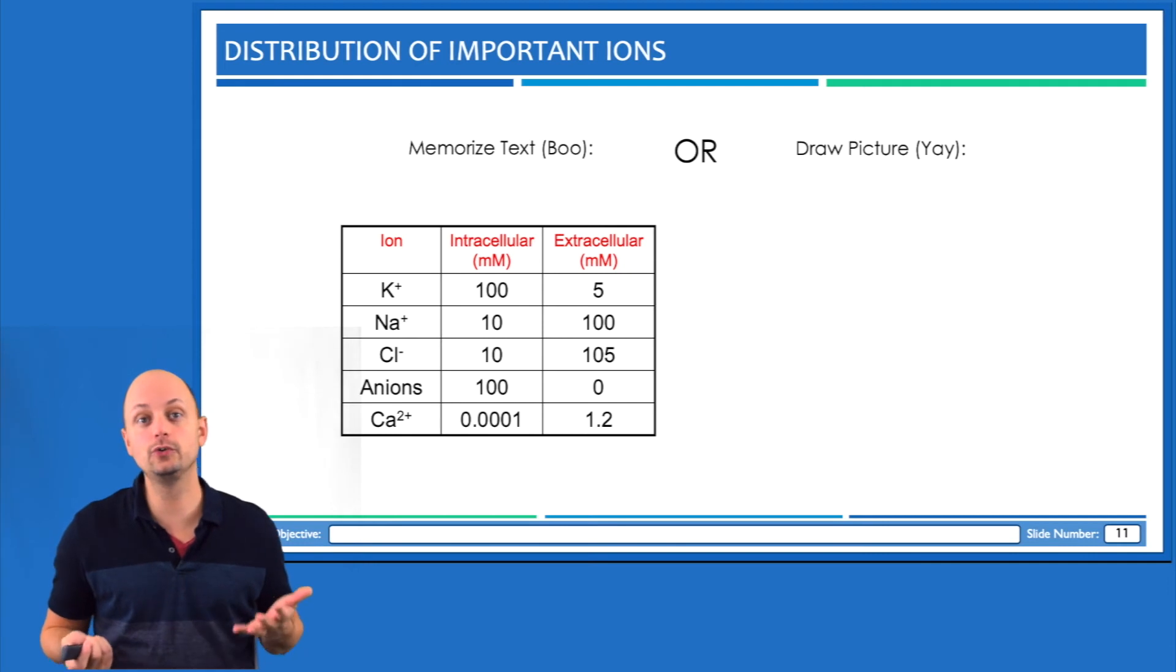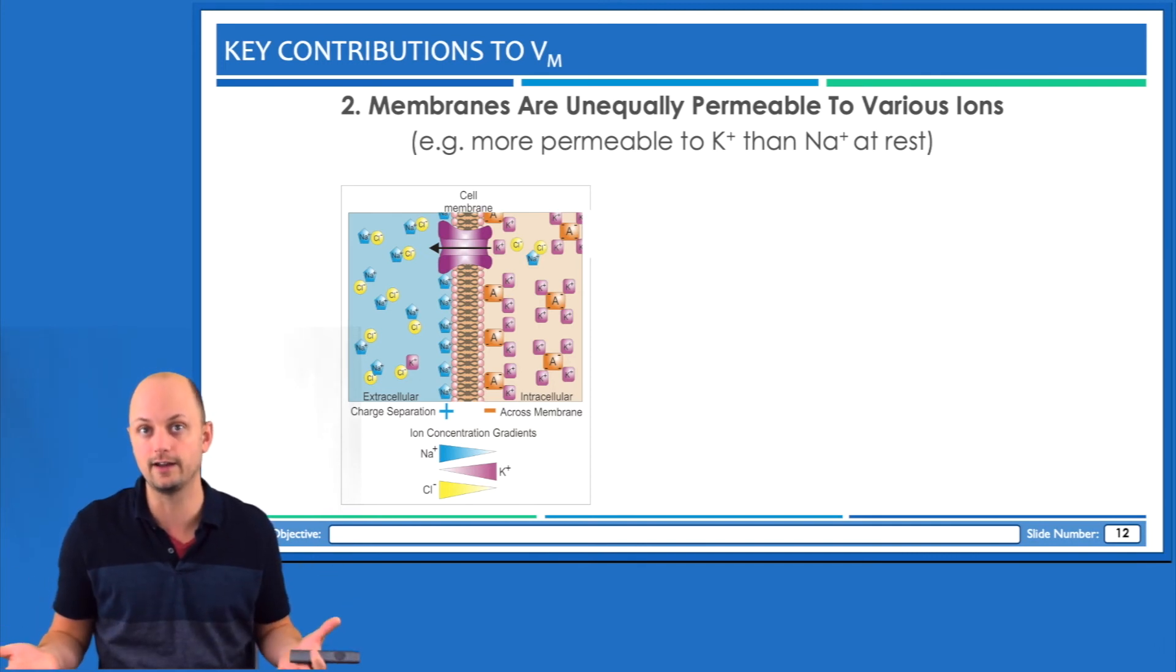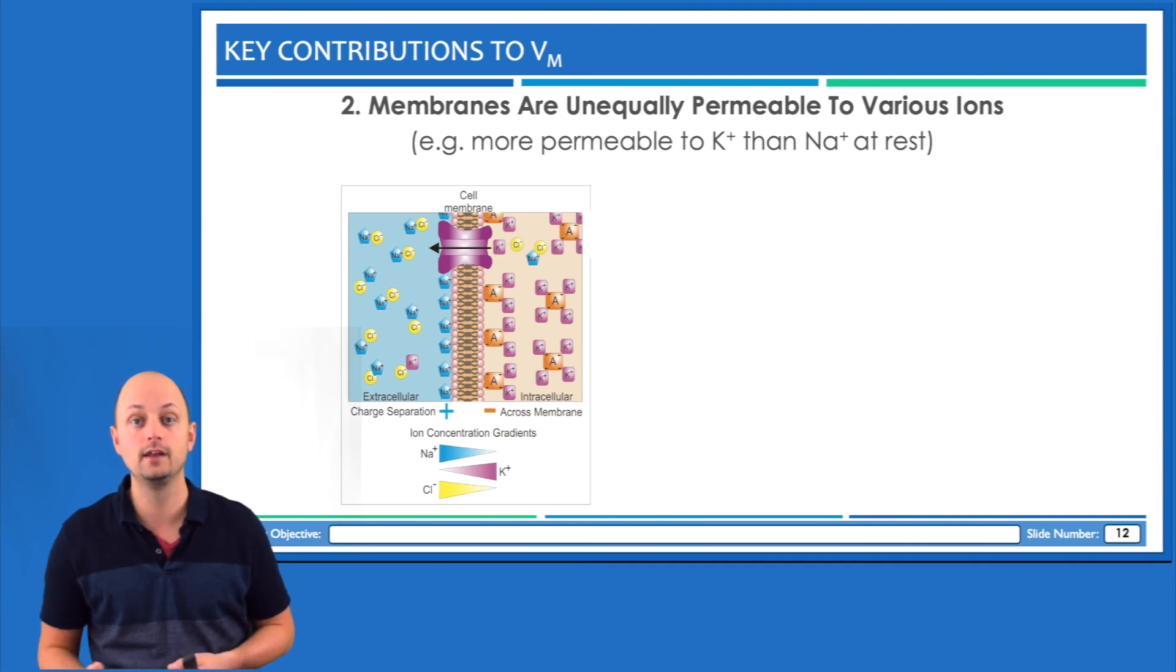Now in addition to creating unequal concentrations of ions, we also know that the membrane can have different permeability to different types of ions. So potassium can have a different permeability than sodium, and sodium can have a different permeability than chloride.